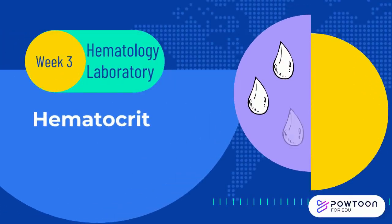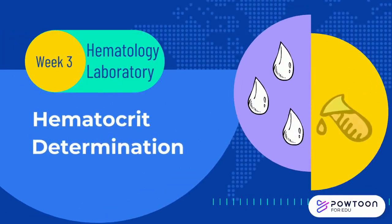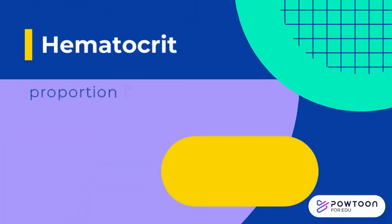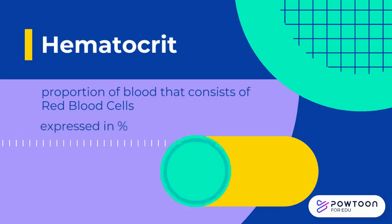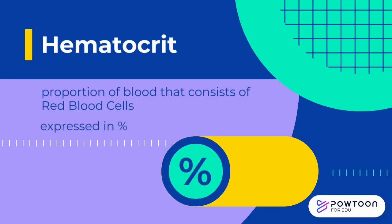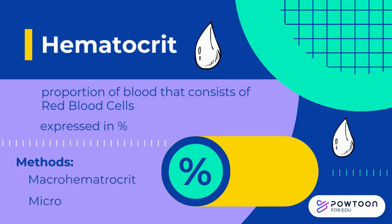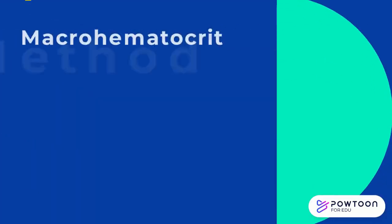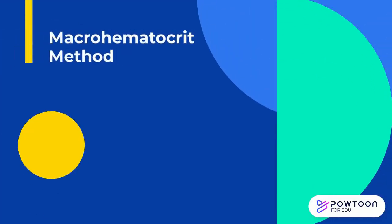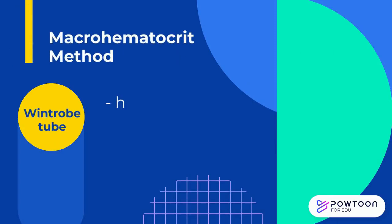This video will discuss two methods for hematocrit determination. Hematocrit is a proportion of blood that consists of red blood cells and is expressed as a percent value. Two general methods for hematocrit determination are the macro hematocrit method and the micro hematocrit method. One procedure for each method will be shown.